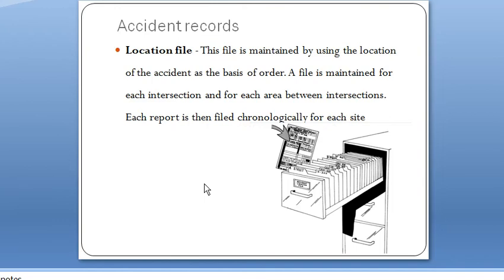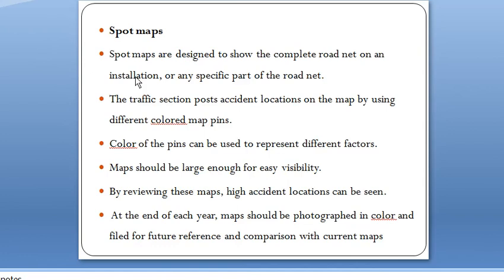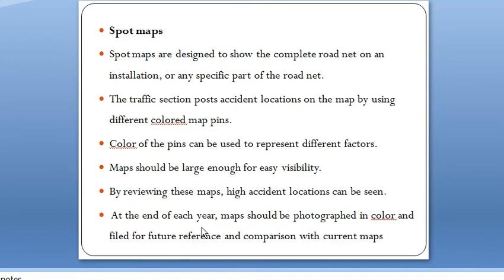The second type of accident record is the spot map. Spot maps are designed to show the complete road network on an installation or any specific part of the road network. The traffic section posts accident locations on the map using different colored map pins. The color of the pins can be used to represent different factors. The map should be large enough for easy viewing so that high accident locations can be seen.